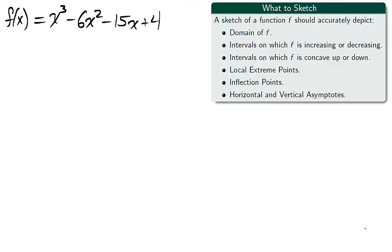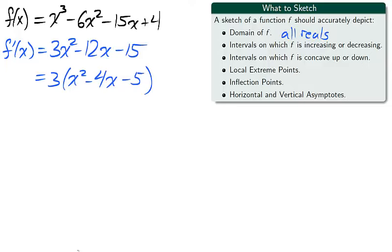Let's take an example. We'll begin by sketching the graph of the polynomial f. Remember that a polynomial is defined on all real numbers, and to find intervals on which the function is increasing or decreasing, we begin by taking the first derivative. We factor a 3, and we factor the binomial.